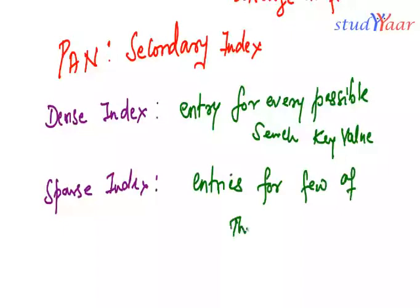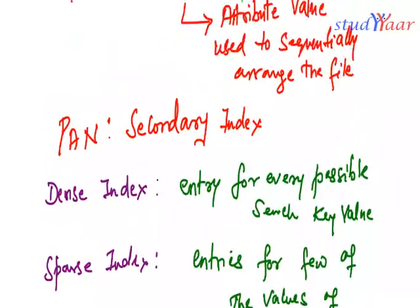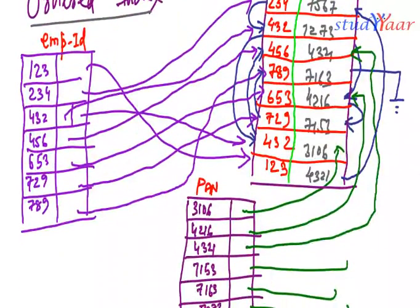A sparse index on the other hand has only entries for few of the values of the search key.